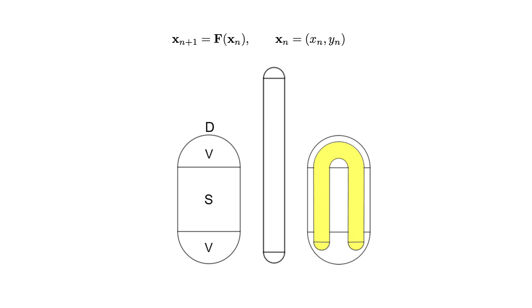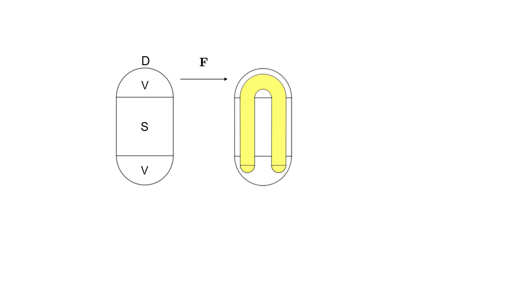Now, we iterate the map, and essentially, our interest is in asking what happens to the original region D after two iterations of the map, or f squared. Again, we take this shape, horizontally compress, vertically stretch, fold it around, and place it back into the region D.